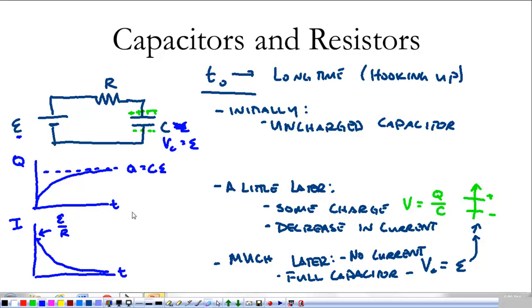It's important to note the relationship between current and charge — current equals DQ over DT. In this case, it's positive DQ over DT because we are adding charges to the capacitor as time goes on. When we get to a discharging capacitor, that might change a little bit, but for now it's positive DQ over DT.